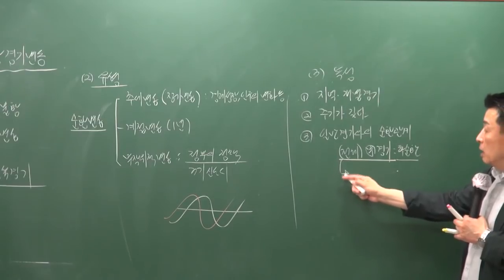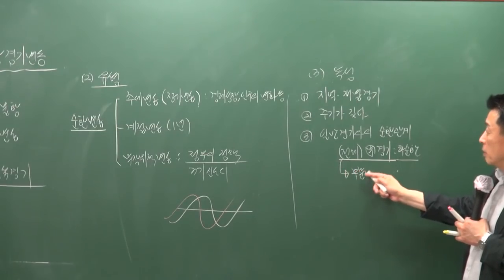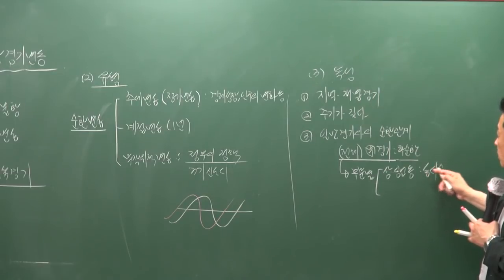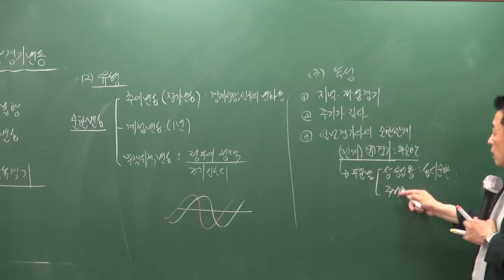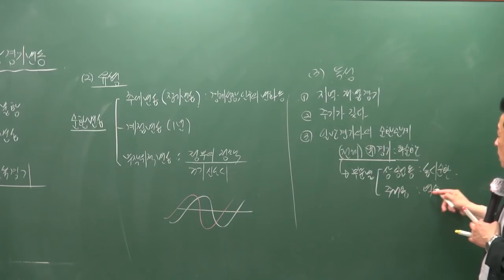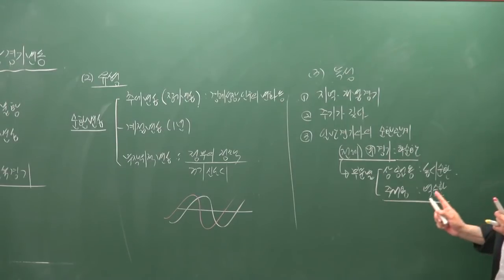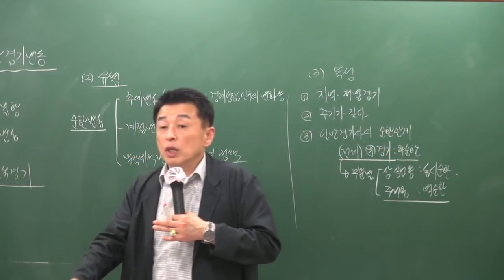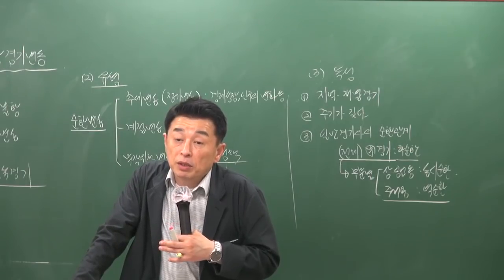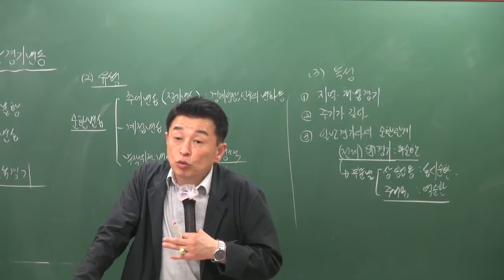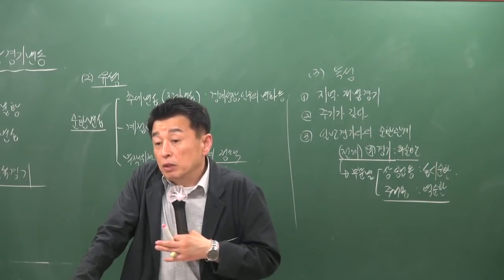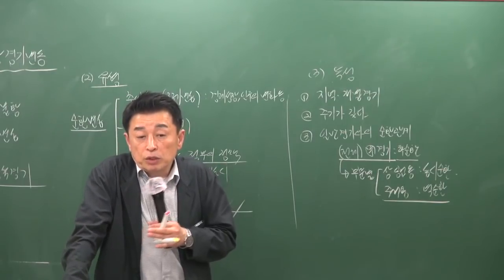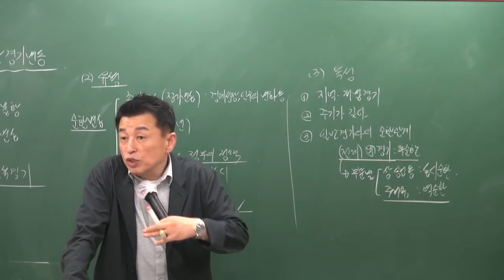부동산 경기 안에서도 부문별로 차이가 있어요. 상업용·공업용 부동산은 일반 경기와 동시순환하고, 주거용 부동산 경기는 일반 경기와 역순환적인 양상을 띠어요. 일반 경기가 호황이면 기업 투자가 늘어나 상업용·공업용 부동산에 자금이 집중되고 금리가 올라가면서, 상대적으로 낮은 금융비용에서 투자되는 주택 부분은 위축될 수밖에 없어요.